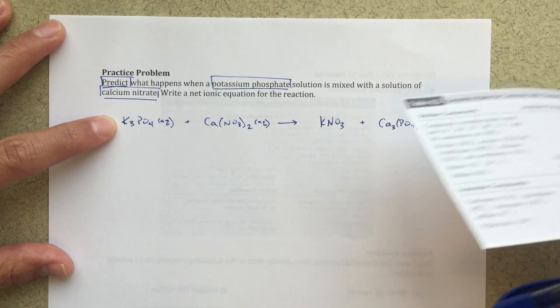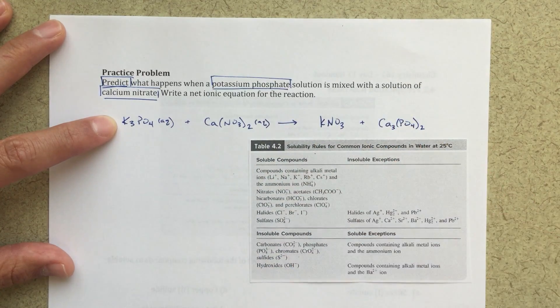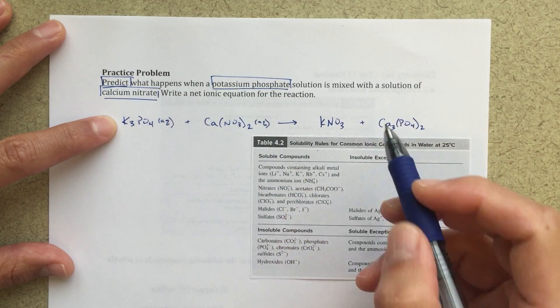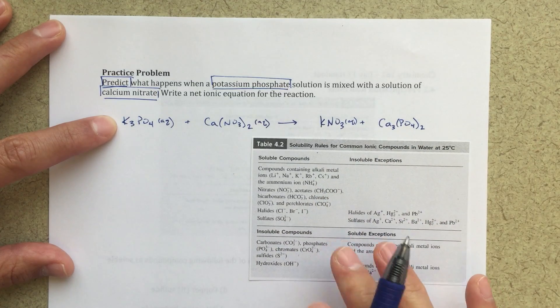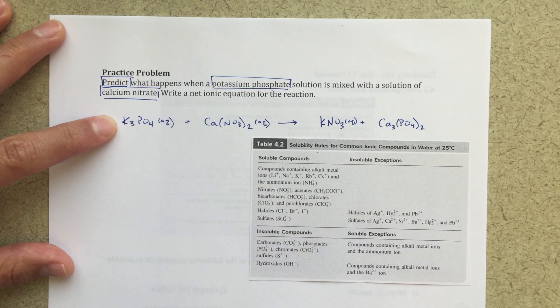Now what I need to do is figure out, are these going to be soluble or insoluble? My potassium nitrate, that's going to be soluble, aqueous. I'm going to dissolve that in water, it's going to be K plus ions, NO3 minus ions.